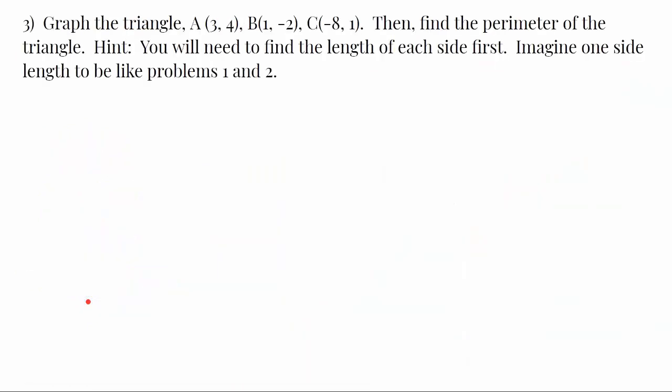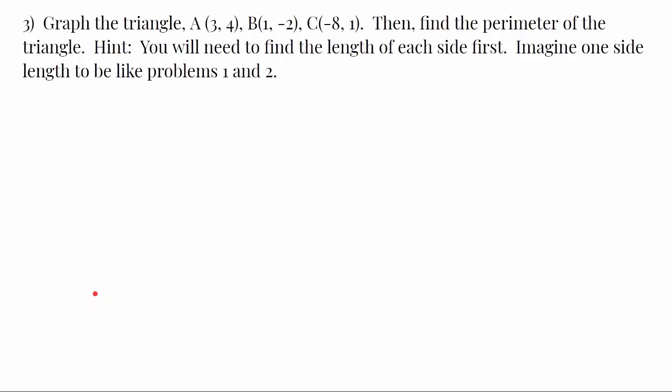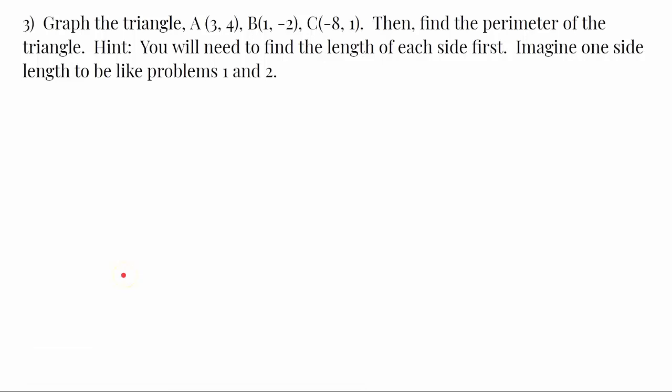Question 3. Again, if you haven't completed this on your own, pause the video and try it on your own. And hit play when you're ready to see the answer. So, we are being asked to graph the triangle A with the ordered pair (3, 4), vertex B (1, -2), and vertex C (-8, 1). Then, we're to find the perimeter of the triangle.